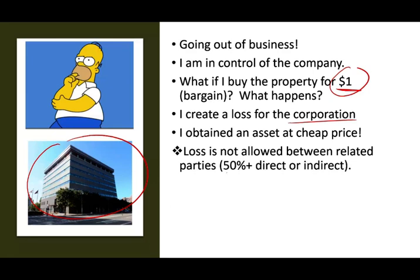Related parties means someone who controls 50% or more, either directly or indirectly. So if Marge, Homer's wife, owns the remainder — if it's more than 50% combined — then Homer is deemed to have owned it, and the tactic doesn't work.